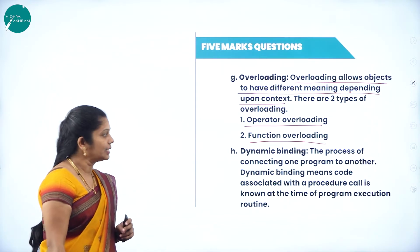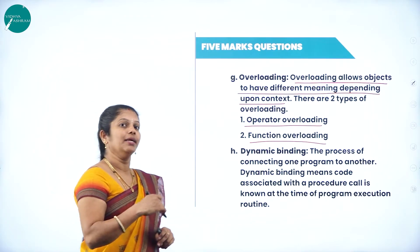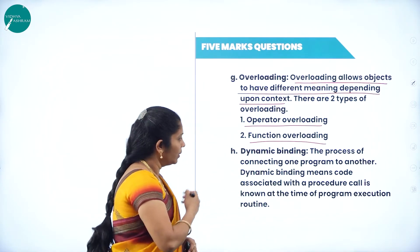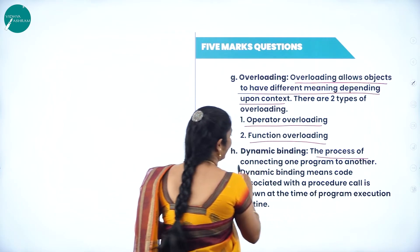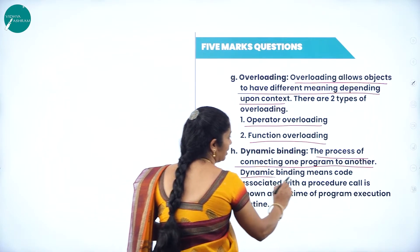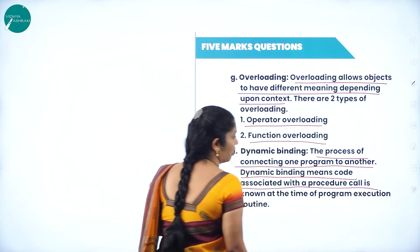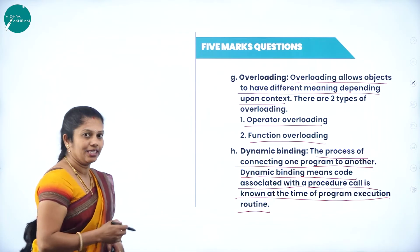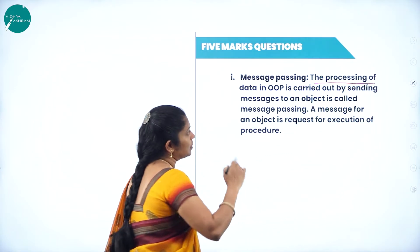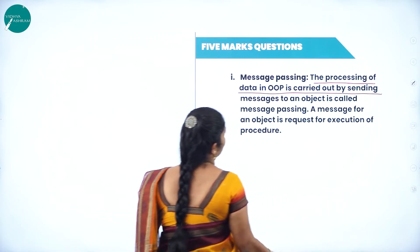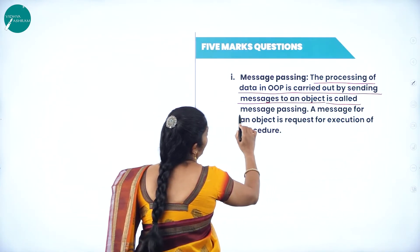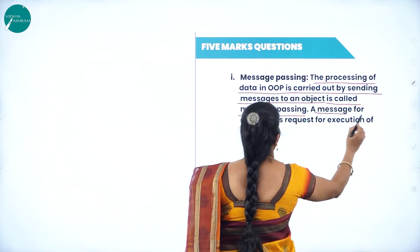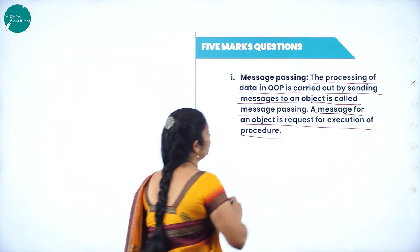The next concept under features is dynamic binding. Binding is a process of combining two sub-programs into one sub-program. Dynamic binding is a process of connecting one program to another — code associated with a procedure call is known at the time of program execution. Next is message passing: the processing of data in OOP is carried out by sending messages to an object. A message for an object is a request for execution of a procedure.